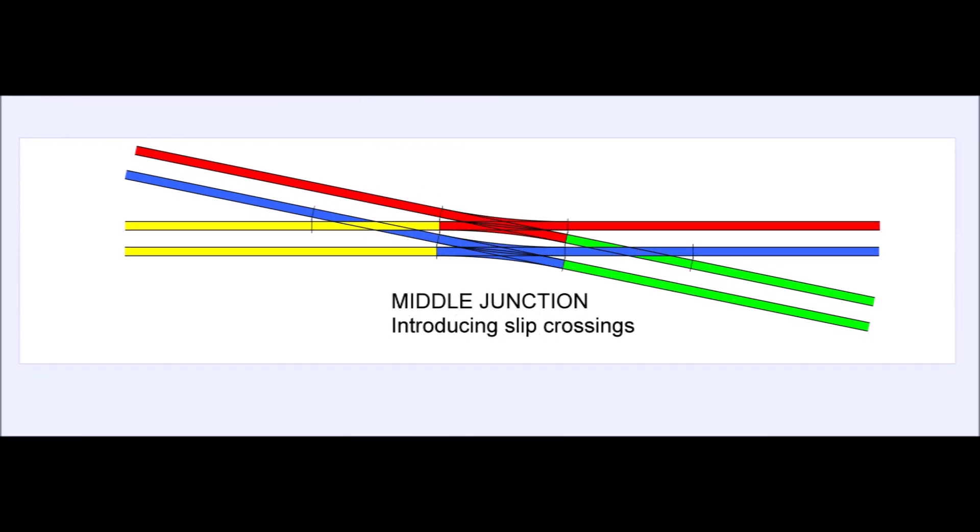So I simply substituted the two centre crossings for double slips and I had what I wanted.